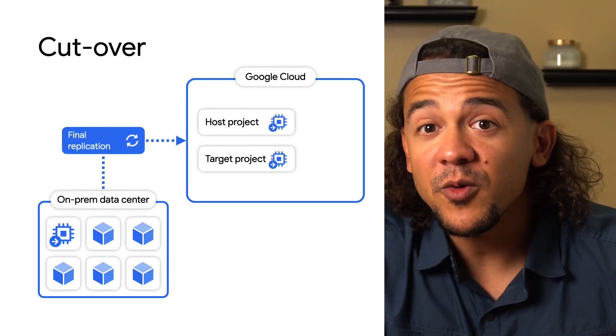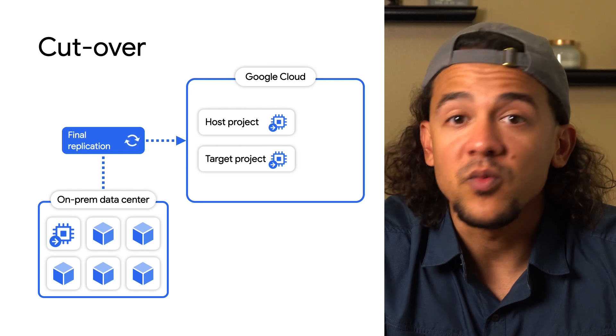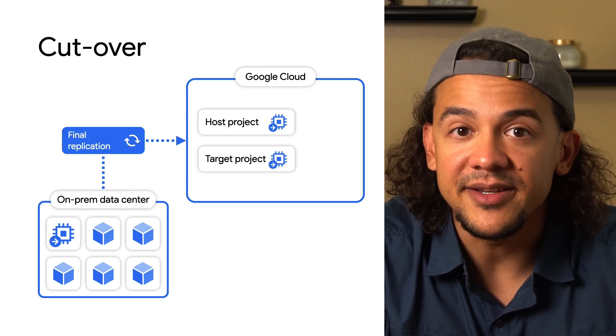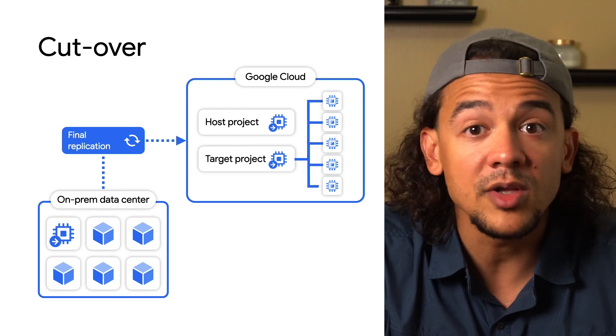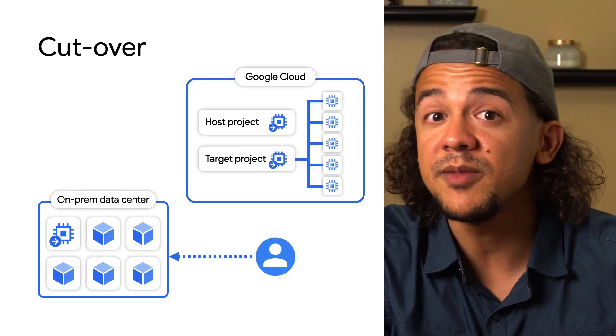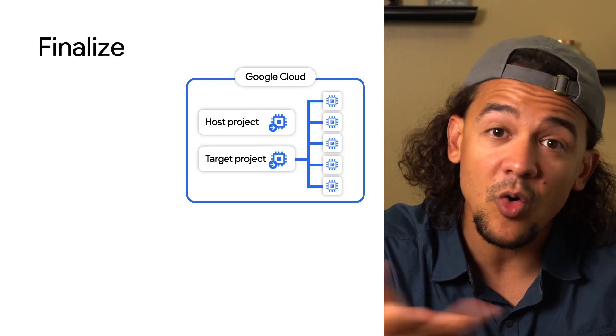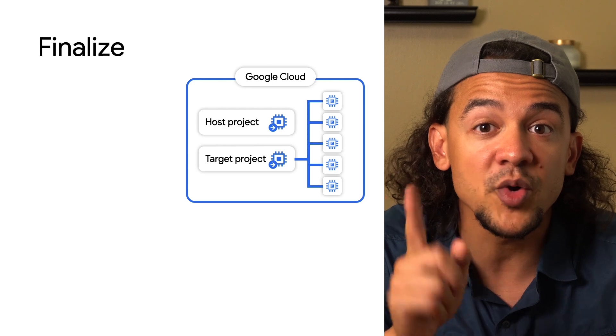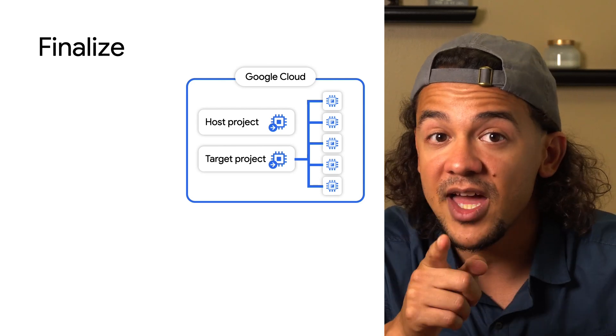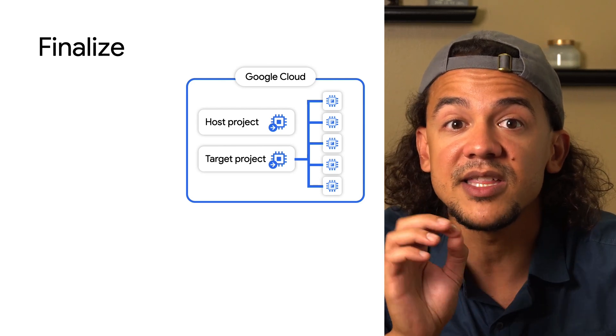During the cutover phase, the source VM is stopped, replication is finalized and ended, and a new Compute Engine instance is created on Google Cloud with the latest replication data. This phase will cause a short amount of downtime, so a maintenance window will need to be implemented while you turn down the origin machine and redirect traffic to the cloud. If all goes well, you'll make it to the sixth and final phase: finalizing your migration. At this phase, all replication data and storage resources associated with the migration of your VMs are deleted, and the VM state is set to finalized.